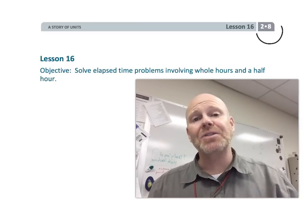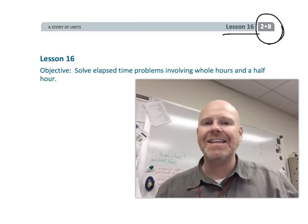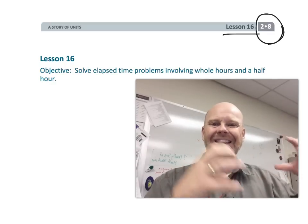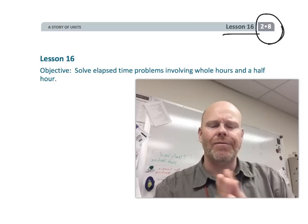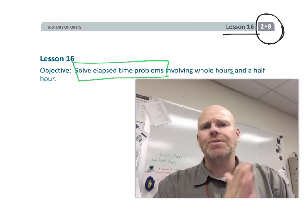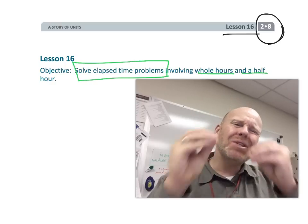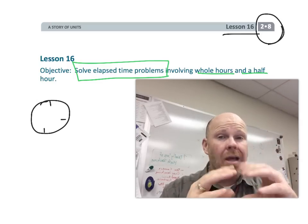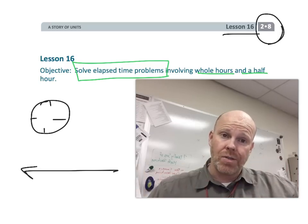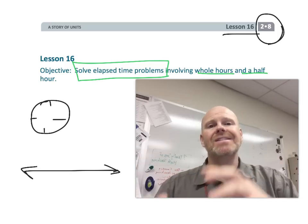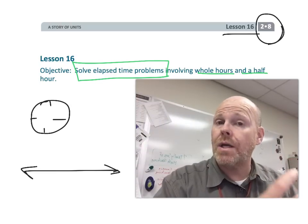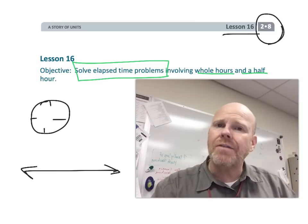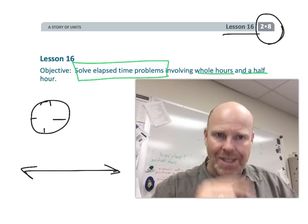All right, this is second grade, module 8, lesson 16. In this lesson, students are going to be talking about solving elapsed time problems involving whole hours and half hours. We're not only going to be talking about a clock, but we're also going to be referring to time on a number line, simply because that's what students do in third grade. So since they're going to be seeing it in third grade, I thought we would do a little bit of a preview in second grade. Let's get started.